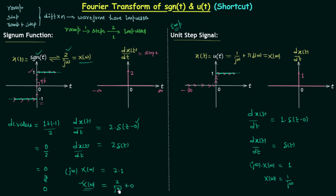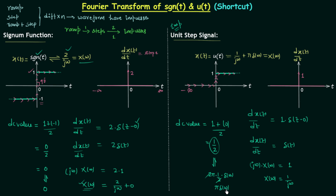For the unit step signal, the DC value is not zero. The DC value equals (1 + 0)/2 = 1/2. The Fourier transform of a DC value of 1/2 is 2π·(1/2)·δ(ω) = π·δ(ω). This must be added to the Fourier transform obtained after differentiation. So the final result is X(ω) = 1/jω + π·δ(ω), which is correct.